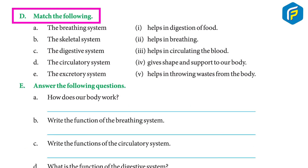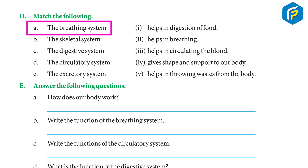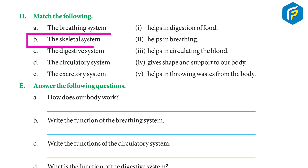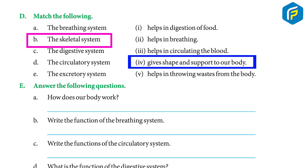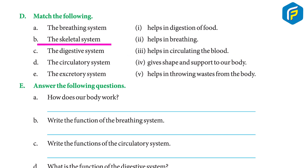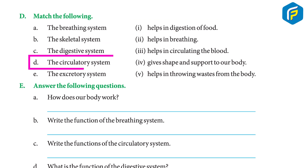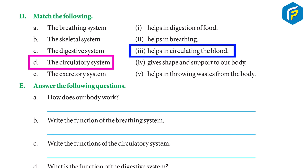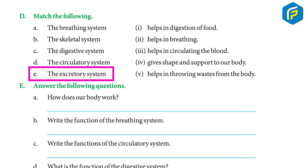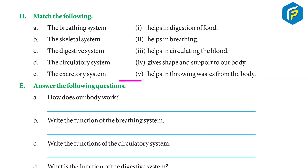Exercise D — Match the following: (a) The breathing system helps in breathing. (b) The skeletal system gives shape and support to our body. (c) The digestive system helps in digestion of food. (d) The circulatory system helps in circulating the blood. (e) The excretory system helps in throwing waste from the body.